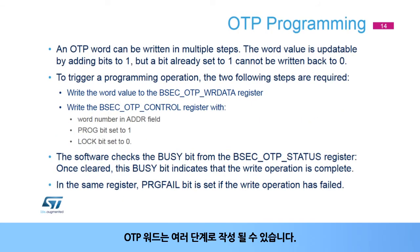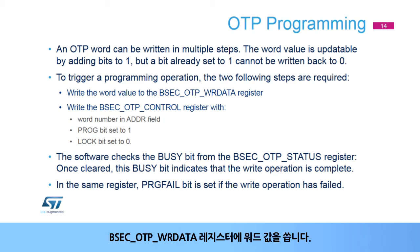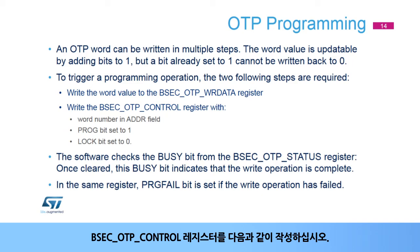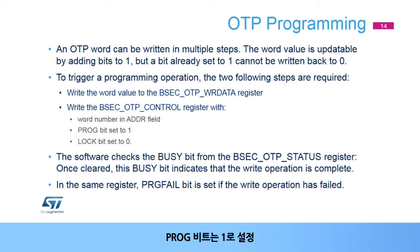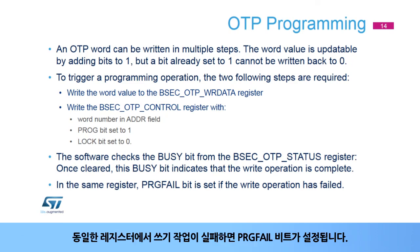An OTP word can be written in multiple steps. The word value can be updated by setting additional bits to 1 only; a bit already set to 1 cannot be reset to 0. To trigger a programming operation, two steps are required: write the word value to the BSEC OTP WR data register, then write the BSEC OTP control register with the word number in the ADDR field, the prog bit set to 1, and the lock bit set to 0. The software checks the busy bit from the BSEC OTP status register; once cleared, this indicates the write operation is complete. The PRG fail bit in the same register is set if the write operation has failed.